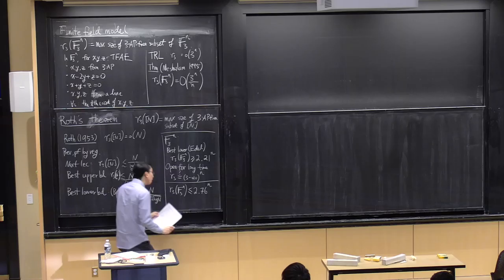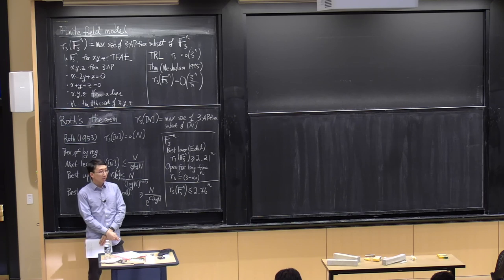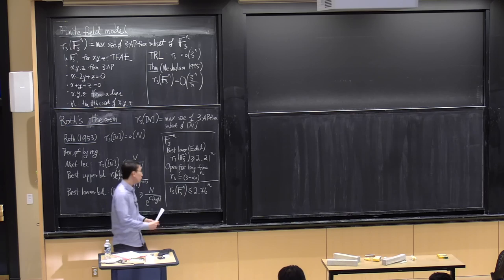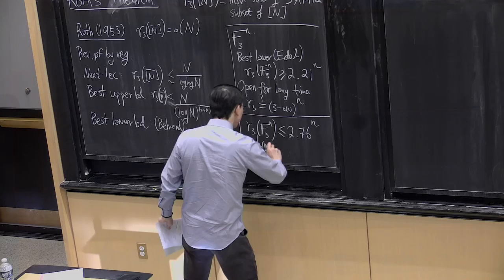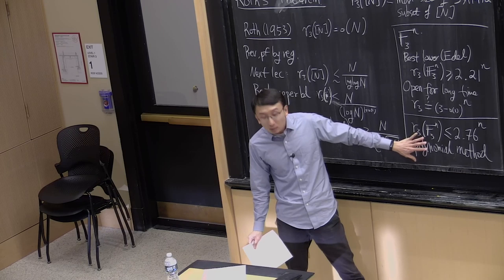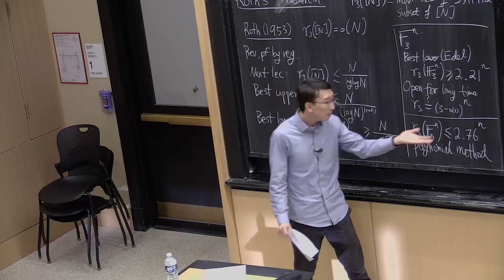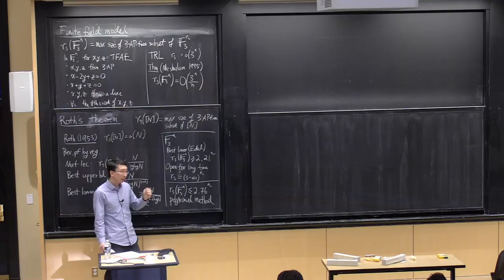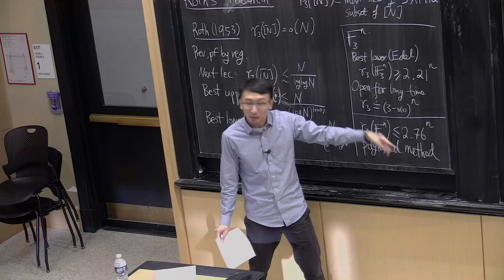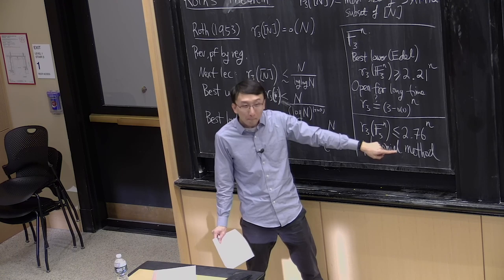Let me say more about the F₃ case. The best lower bound is due to Edel, giving roughly 2.21ᴹ. The upper bound is (3 − o(1))ᴹ, and for a long time it was open whether the answer is roughly 3ᴹ or some constant less than 3ᴹ. Improvements on the upper bound were very slow until an incredible breakthrough a few years ago — a couple-page paper that significantly improved the upper bound to roughly 2.76ᴹ. This proof uses the polynomial method, not Fourier analysis, and unfortunately does not seem to generalize to the original Roth's theorem.